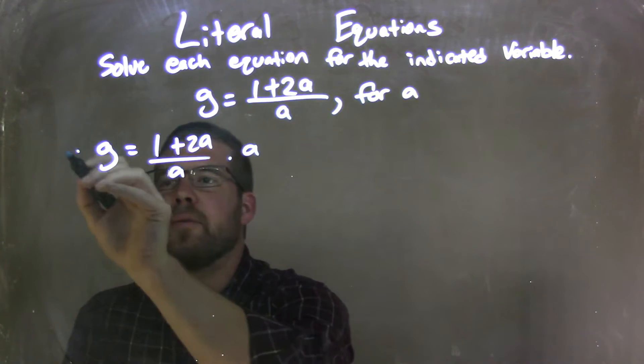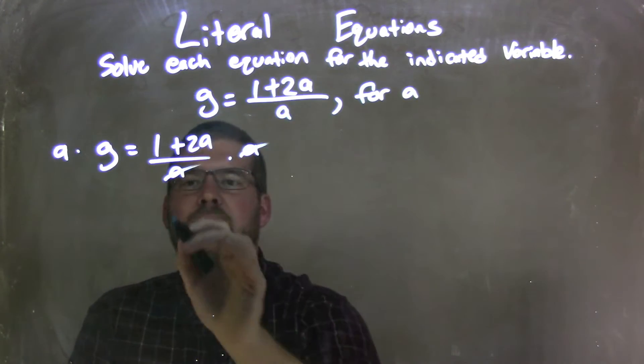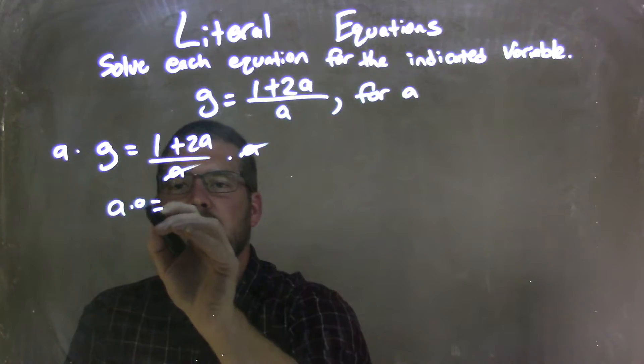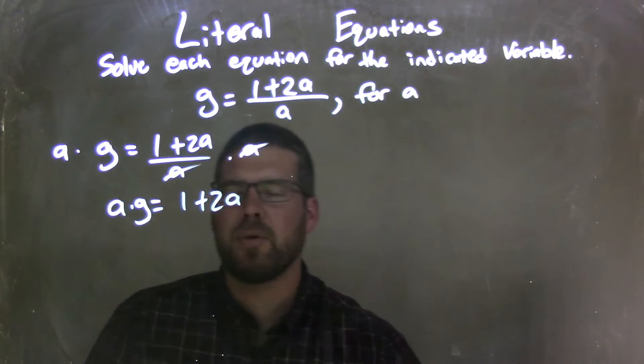So by doing that here, multiplying both sides by a, a's cancel here, leaving me with a times g equals 1 plus 2a.